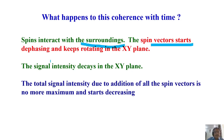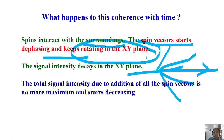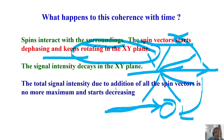The spins interact with the surroundings and the spin vectors start dephasing, keep rotating in the XY plane. As soon as you bring all the spin packets from the Z-axis to the X-axis, initially they are aligned, but then one will start moving faster, one slower. We call these faster and slower moving components. When all these spins are aligned along the axis where the receiver is kept, immediately after applying the pulse the signal intensity is maximum.